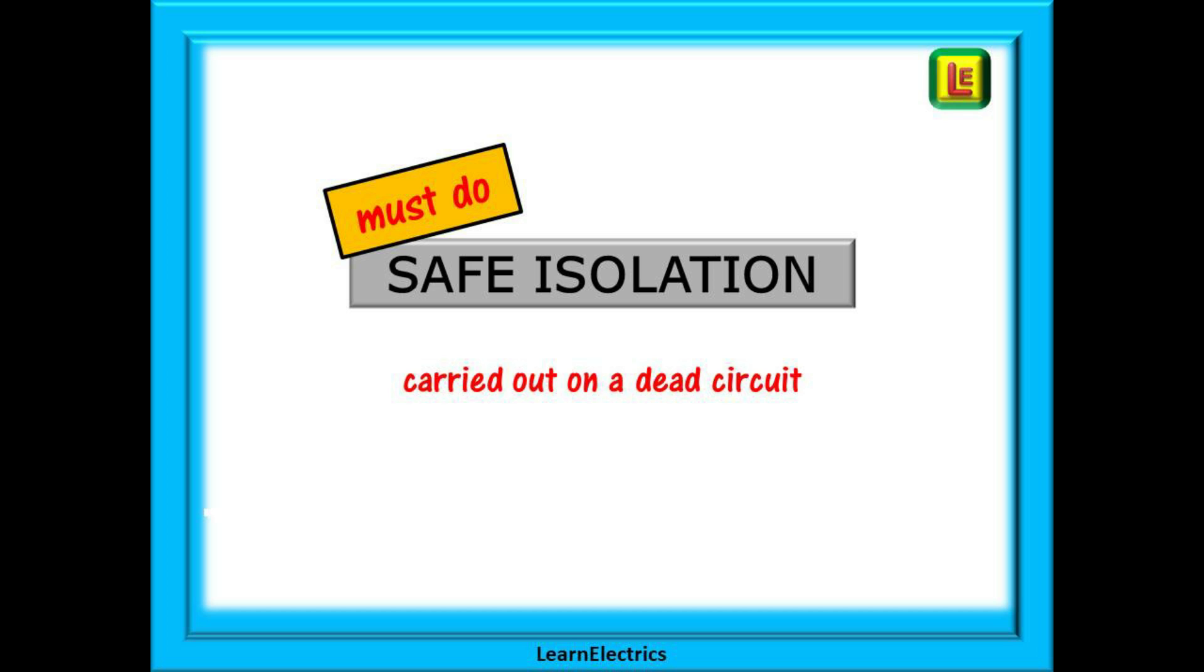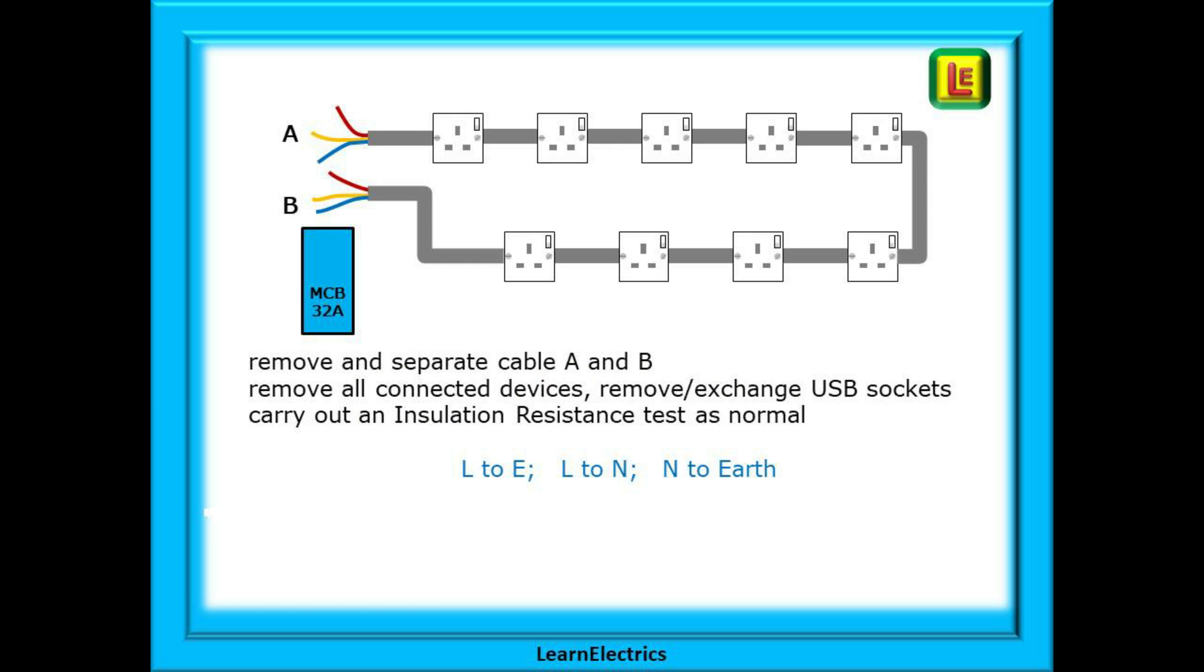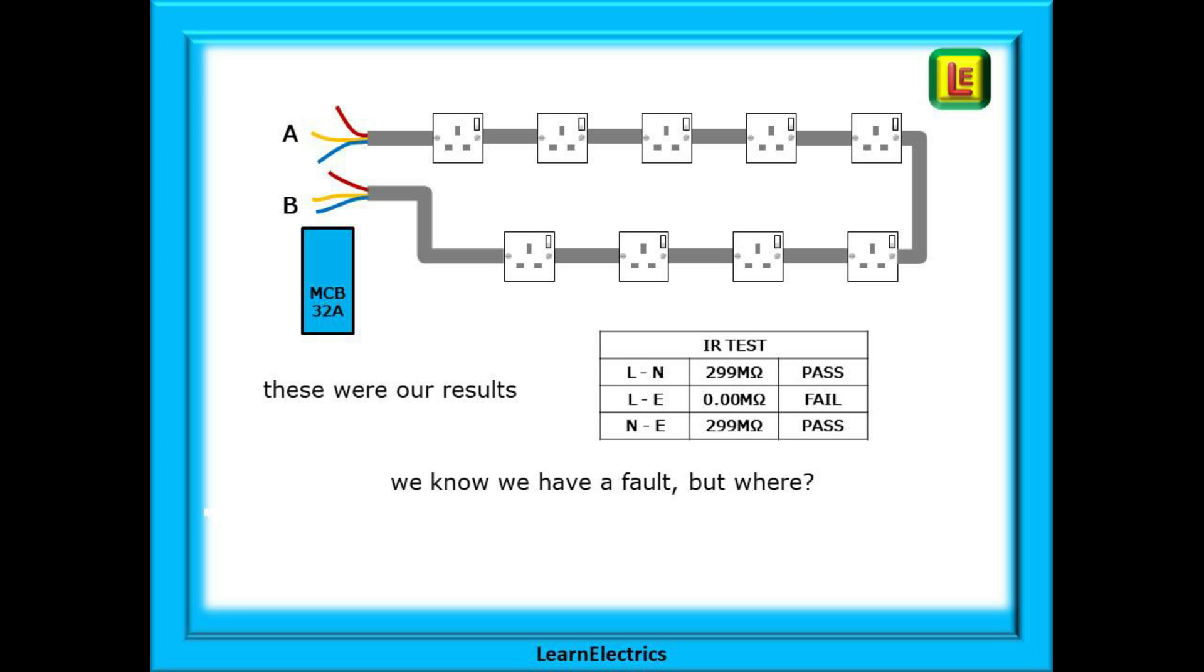Now we can look at insulation resistance faults. You must make sure that the circuit is safely isolated and locked off because these are all dead tests. First we will need to remove and separate cable A and cable B at the consumer unit. Be sure to remove all connected devices and temporarily remove or exchange any USB sockets with ordinary sockets, and then carry out an insulation resistance test as normal. We want no links in these tests. We're testing that each conductor is separate from the others. We should test live to earth, live to neutral, and neutral to earth. I normally start at 250 volts test voltage just to make sure that nothing has been left in circuit, sort any connected equipment issues that appear, and when a 250 volt test passes, turn the test voltage up to 500 volts.